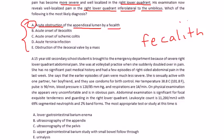Let's get into the last one. A 15-year-old secondary school student is brought to the emergency department because of severe right lower quadrant abdominal pain. She was at volleyball practice when she suddenly doubled over in pain. She has no significant past medical history and had a few episodes of right-sided abdominal pain in the last week. She says that the earlier episodes of pain were much less severe. She's sexually active with one partner, her boyfriend, and they use condoms for birth control. Her temperature is 101 or 38 Celsius, pulse is 90, blood pressure is 120 over 85, respirations are 14. On physical exam, she appears very uncomfortable and is in obvious pain. Abdominal exam is significant for focal exquisite tenderness and guarding in the right lower quadrant. The leukocyte count is 11,200 with 69% segmented neutrophils and 2% band forms. The most appropriate test or study at this time.